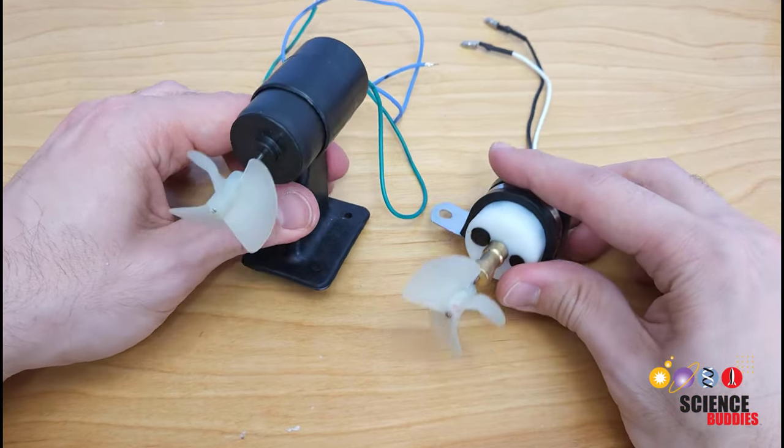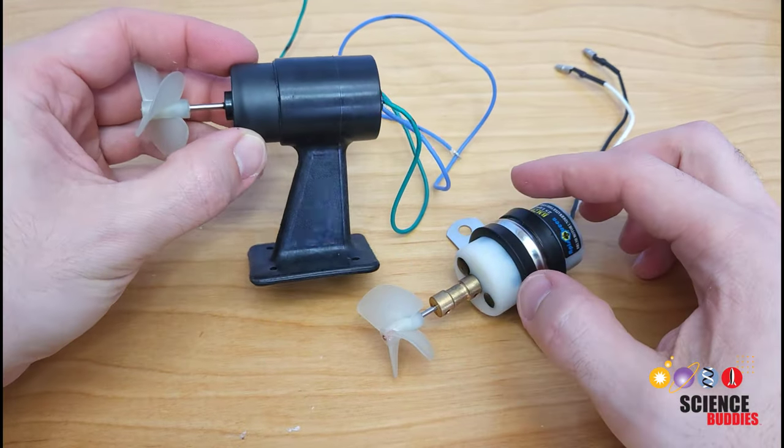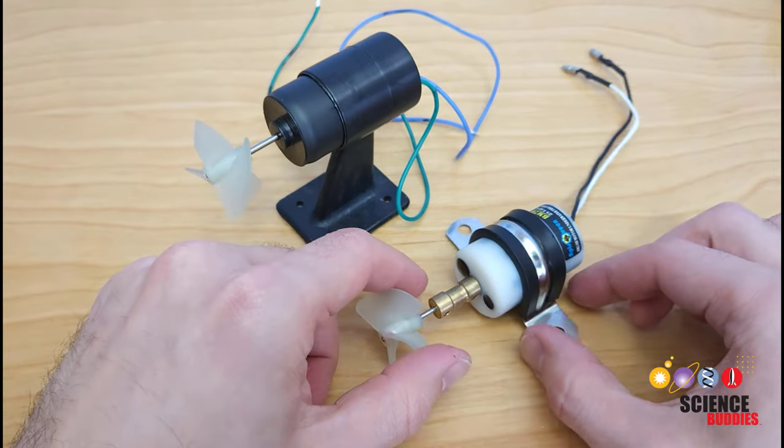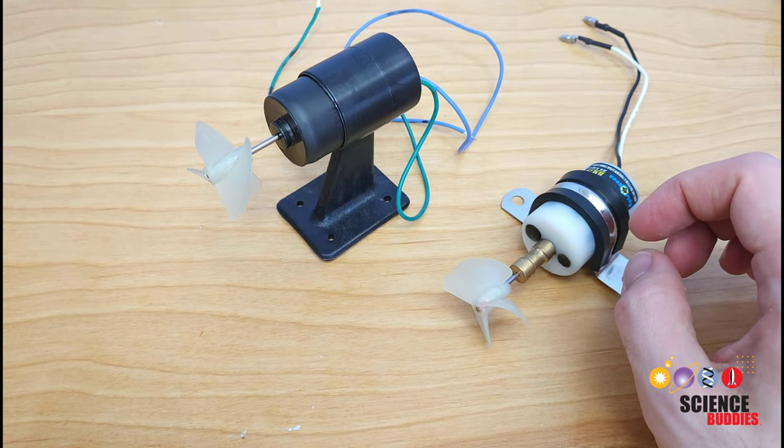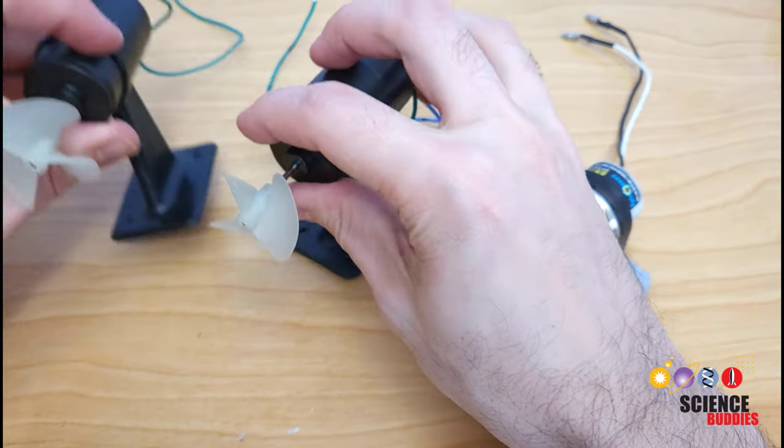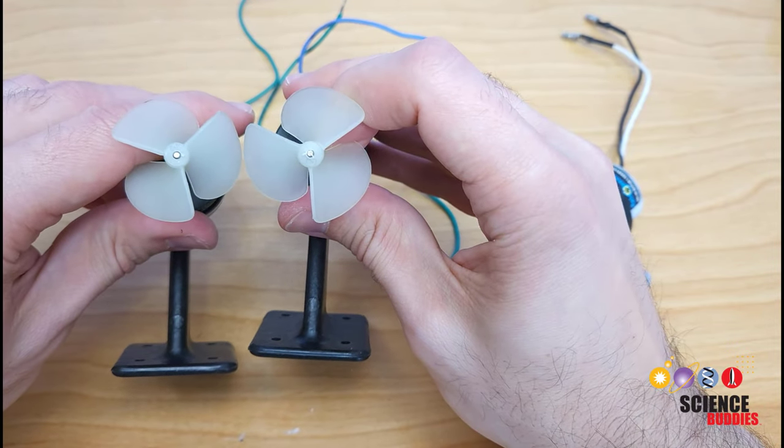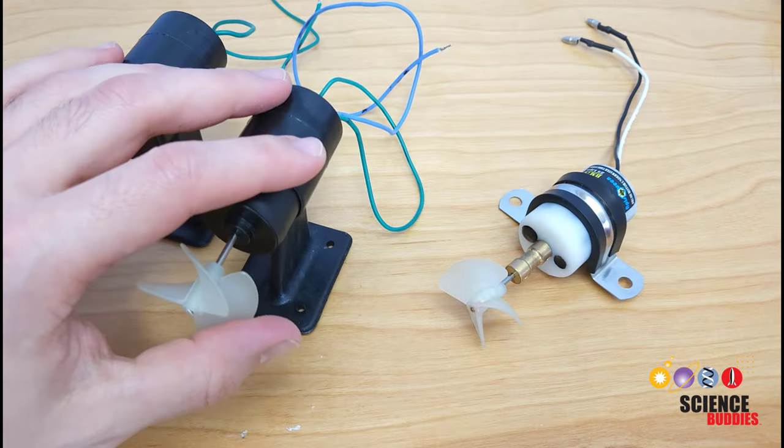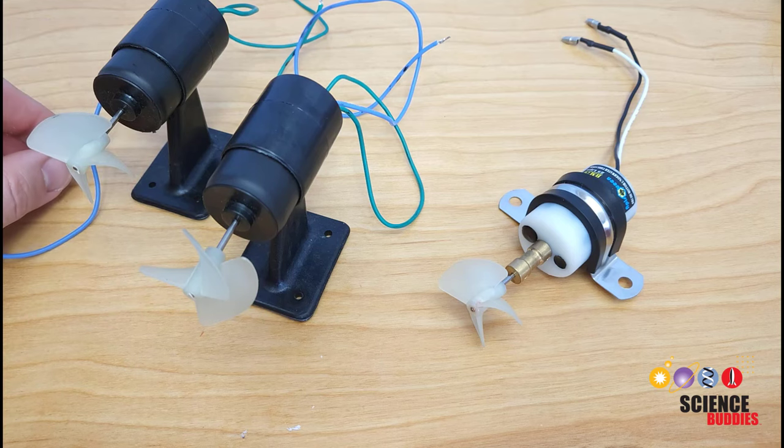A note about these underwater thrusters, there are a variety of them available online. For this project, you will want to make sure you buy a brushed thruster, not brushless. You need a different circuit to control that with the Arduino. And ideally, you want to find them with one clockwise and one counterclockwise propellers. So the propellers will look like mirror images of each other like this. Due to conservation of angular momentum, if both propellers spin in the same direction, then your entire ROV can spin in the opposite direction.